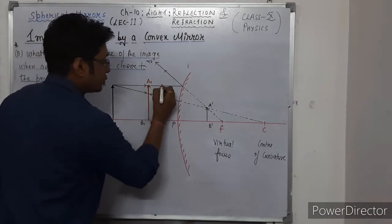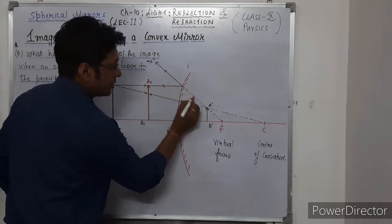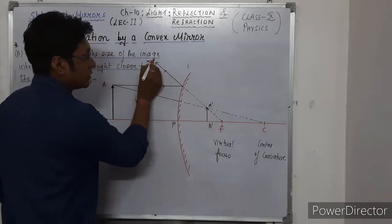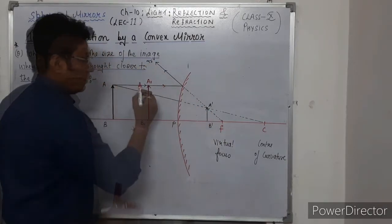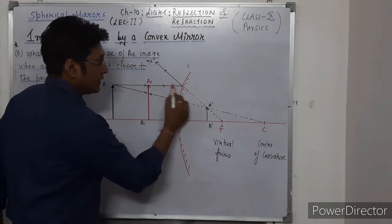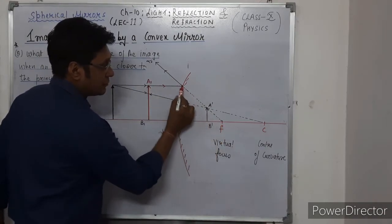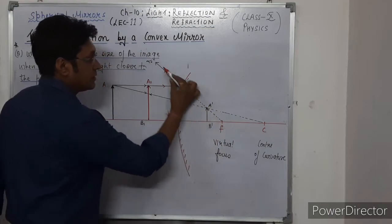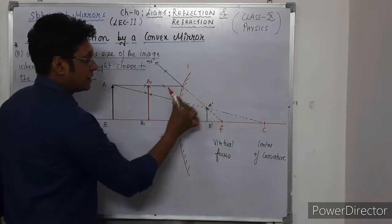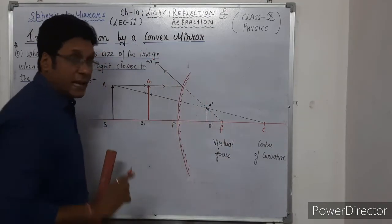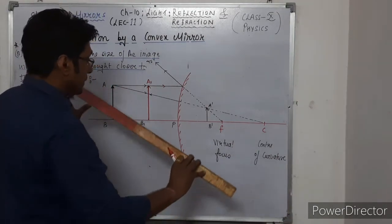The first ray remains the same — it goes parallel to the principal axis and diverges from the focus. The second ray, which goes toward the center of curvature, will have a change.